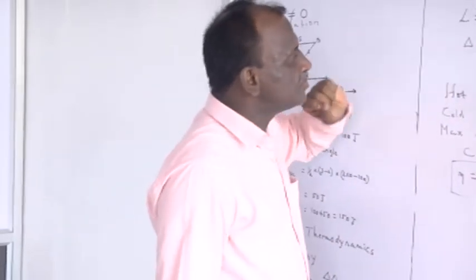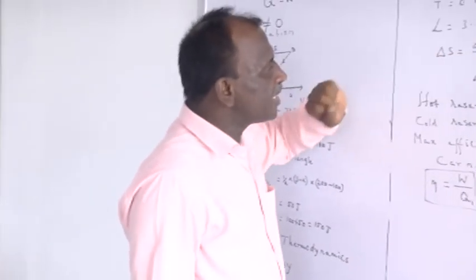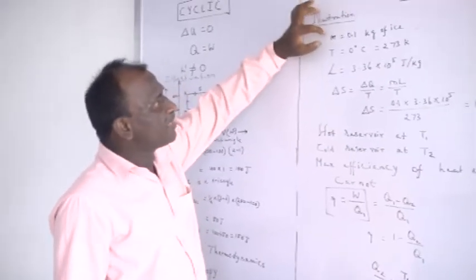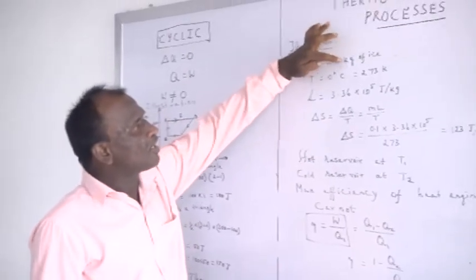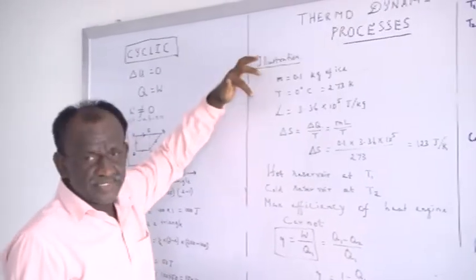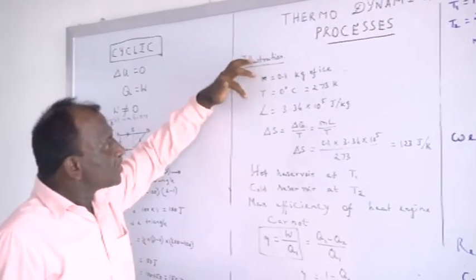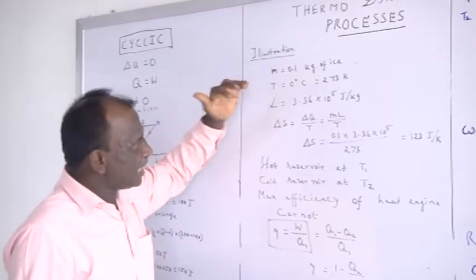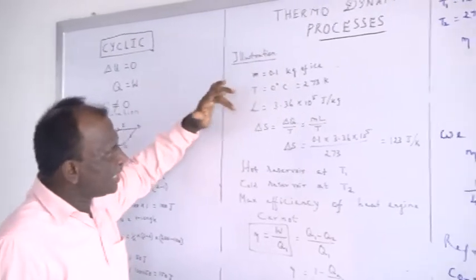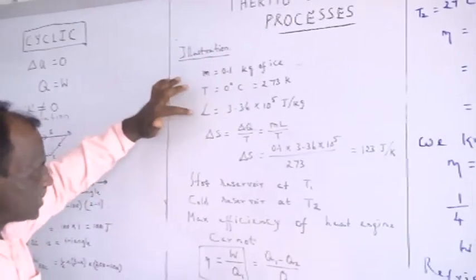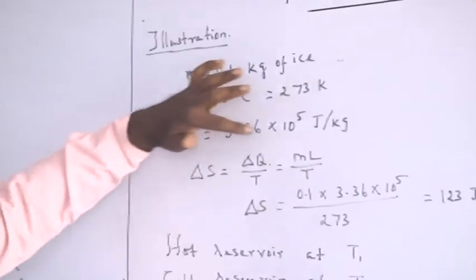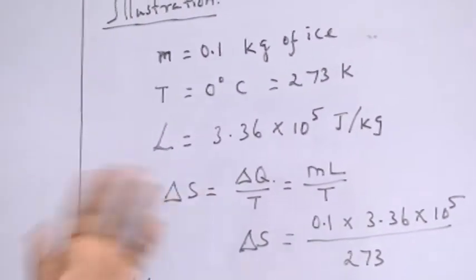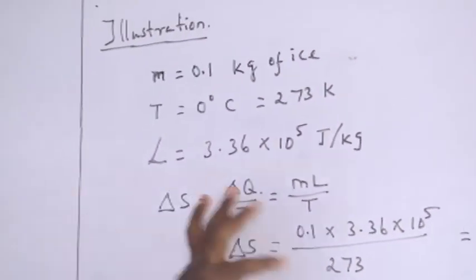This is a very important formula. Suppose I am provided with 0.2 kilograms of ice being converted at 0 degrees Celsius into water. The latent heat of fusion is given. I can find the change in entropy using ΔS equal to ΔQ/T.